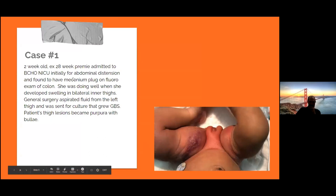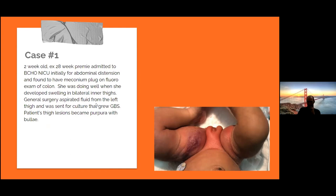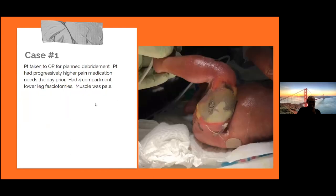Case number one. This is a two-week-old ex-28-week preemie admitted to BCHO NICU, initially for abdominal distension, found to have meconium plugs on fluoro. She was doing well when she developed swelling in bilateral inner thighs. General surgery aspirated fluid from the left thigh; culture grew group B strep. The thigh lesions then became purpura with bullae, and the patient was taken to the OR for planned debridement.